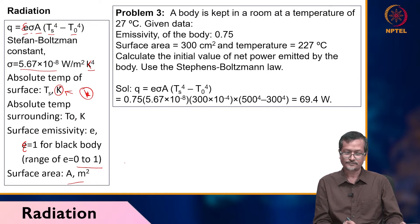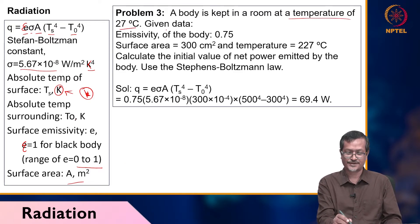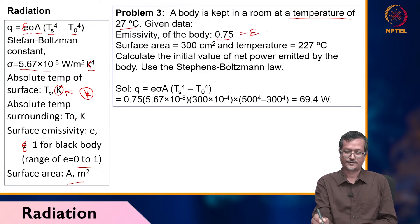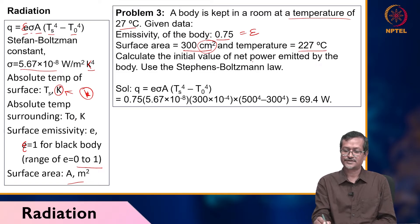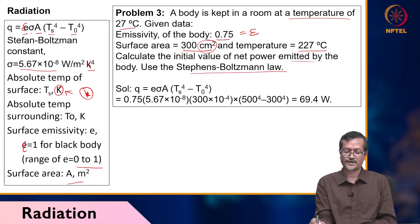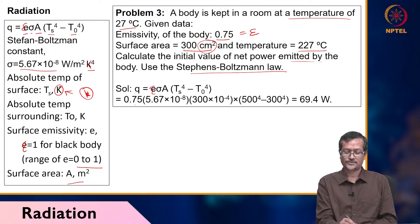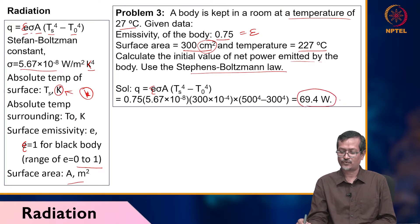Now let us see a problem. A body is kept in a room at a temperature of 20 degrees centigrade. Data given: emissivity is given, surface area is 300 centimeter squared — note this unit — and surface temperature is 220 degrees centigrade. Calculate the initial value of net power emitted by the body using the Stefan-Boltzmann law: Q equals epsilon sigma A (T_s to the power 4 minus T_o to the power 4). From that you get 69.4 watts.